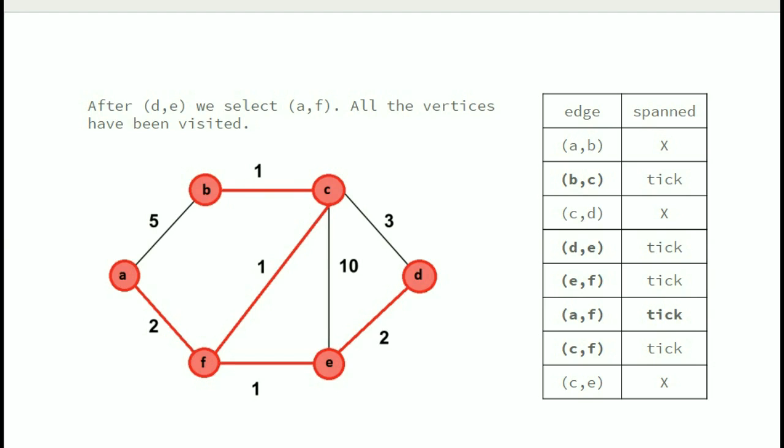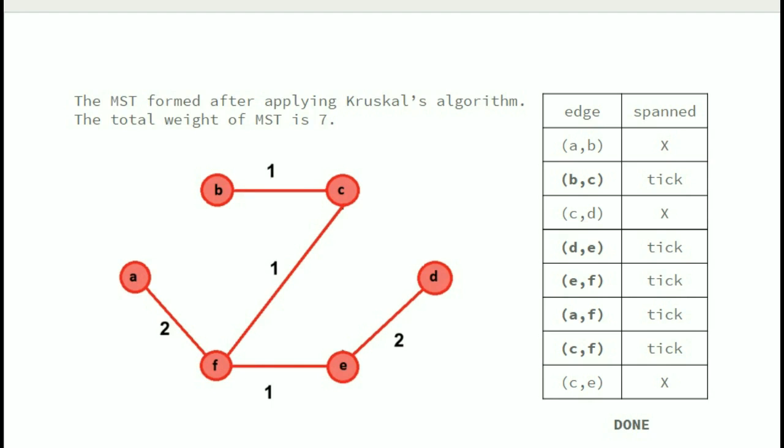For all other edges we are left with, we see that all the vertices have been visited so we get the minimum spanning tree. This is the final minimum spanning tree we get after applying Kruskal's algorithm and the weight of this MST is 7.